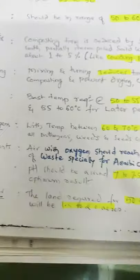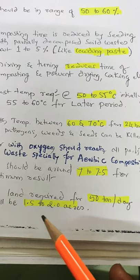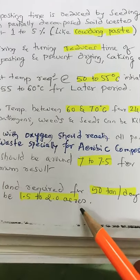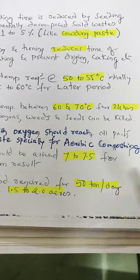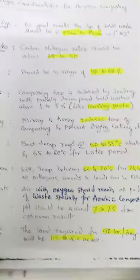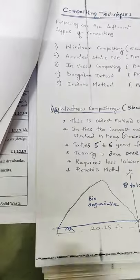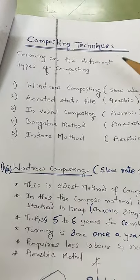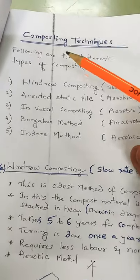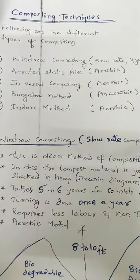Land required: you need a land of 1.5 to 2 acres for 50 tons per day conversion of compost. Today I will end it here. Next class, we will study the various techniques of composting. Thank you.